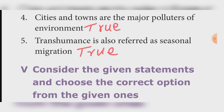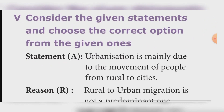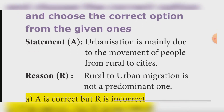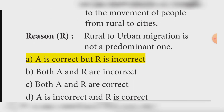Consider the given statements. Statement: Urbanization is mainly due to the movement of people from rural to cities. Reason: Rural to urban migration is not predominantly dominant. Answer: Option A — Statement is correct but Reason is incorrect.